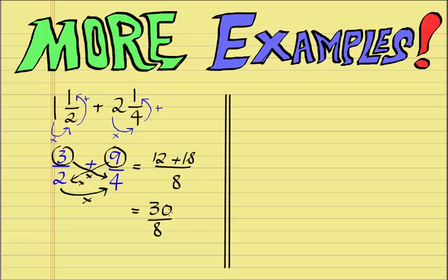Now we can either convert this into a mixed number straight away or simplify it first. I'm going to convert it into a mixed number straight away, so I'll divide 30 by 8. 8 goes into 30 three times — 3 eights are 24 — with a remainder of 6. Write the remainder over the fraction line and keep our original denominator 8. So 3 and 6/8 is our final answer in this case.